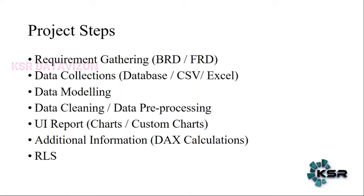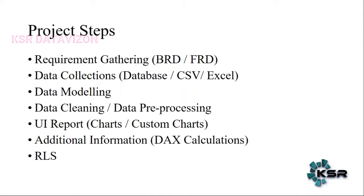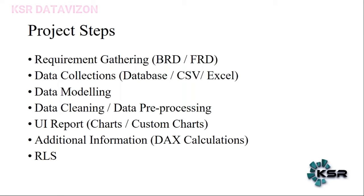There is a Functional Requirement Document as well, where you'll be given the steps, the calculations, or the approach on how you have to take forward the report. Usually most clients follow one document where they combine both the functional requirement and business requirement into a single document. This will be the first step. Post this, after understanding the requirement, you will be collecting the data from different sources. Remember, no client is going to give you ready-made data or data in one sheet.